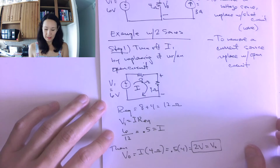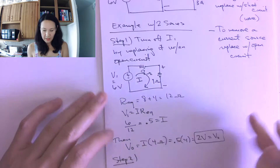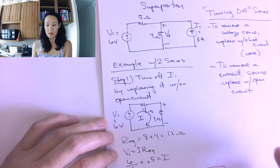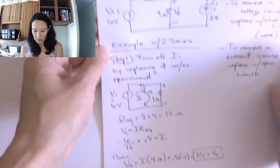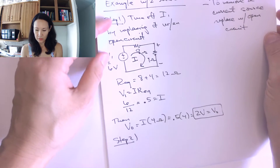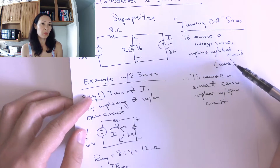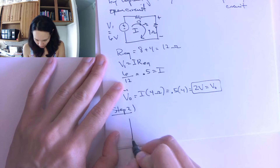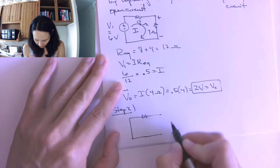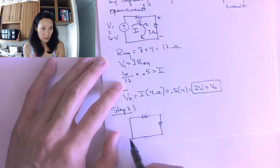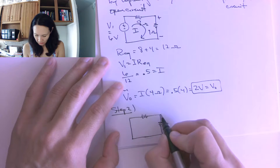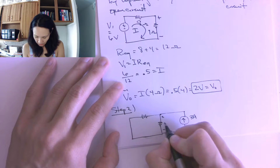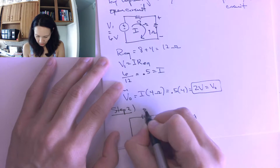Step two: now I'm going to put back I1 and turn off V1 — considering one source at a time. To turn off V1, since it's a voltage source, I replace it with a short circuit, just a wire. So my circuit for step two has just the current source in it: I replace V1 with a wire, put back my I1 source of three amps, with the four ohm and eight ohm resistors.